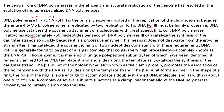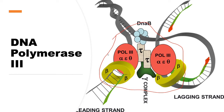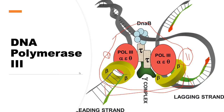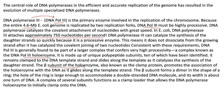Consistent with this requirement, DNA Pol 3 is generally found to be part of a larger complex that confers very high processivity — a complex known as the DNA Pol 3 holoenzyme. The holoenzyme is made up of unique polypeptide subunits, ten of which have been identified. It remains clamped to the DNA template strand. Here you can see the beta part clamped with the DNA strand. The beta subunit of the holoenzyme, also known as the clamp protein, promotes the association of the holoenzyme with the DNA as it glides along the template strand.